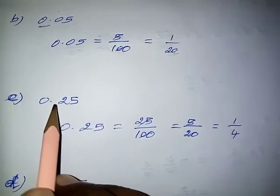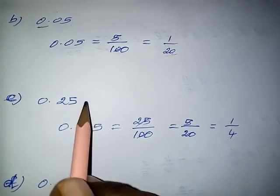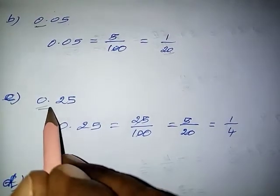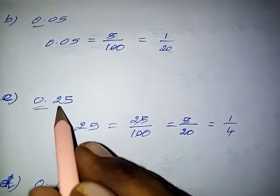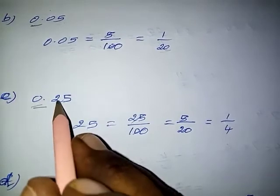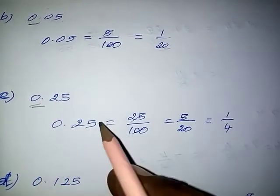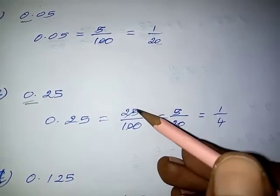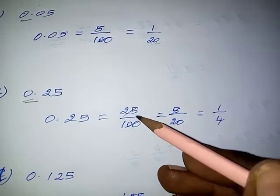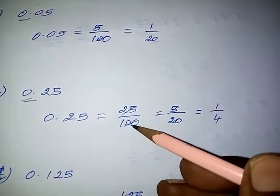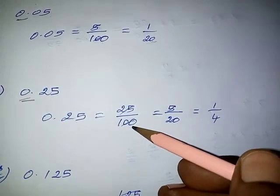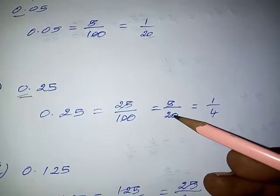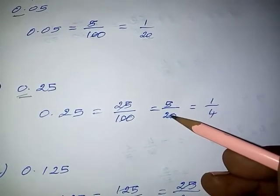Question number 3: 0.25. In this sum also, the integral part is 0 and the decimal part has 10th and 100th places. So the fraction value of the given decimal is 25 by 100. Now, 25 and 100 — we have to cancel using the 5 times table: 5 fives are 25 and 20 fives are 100.